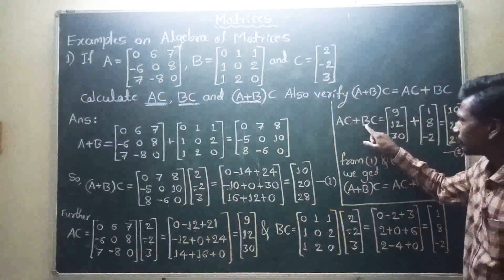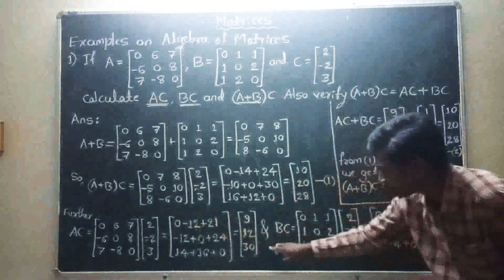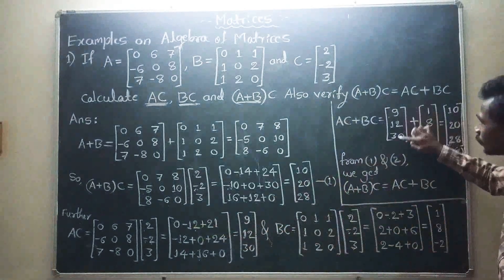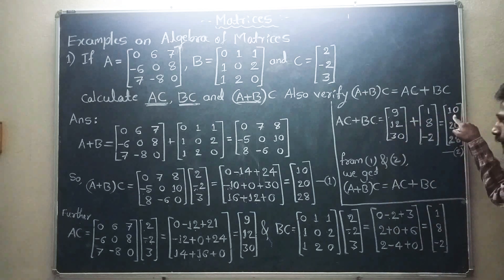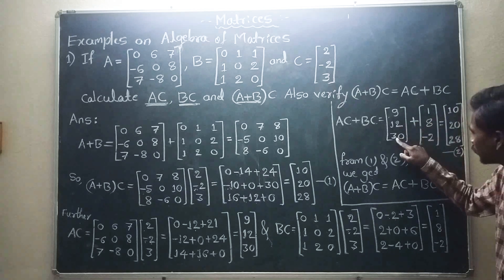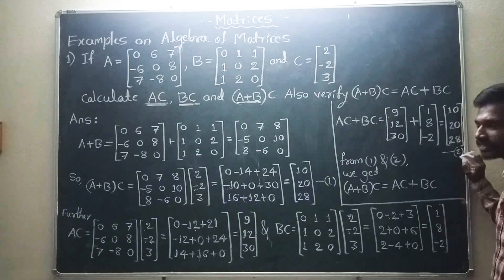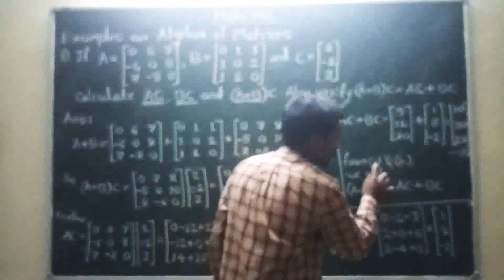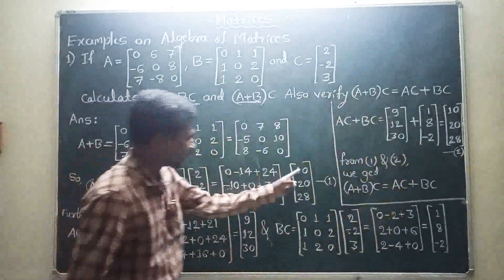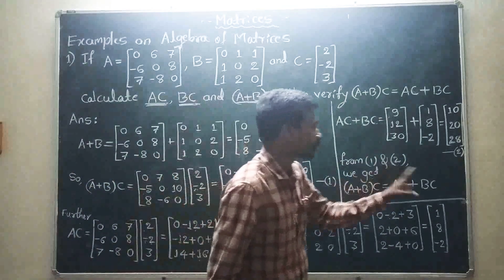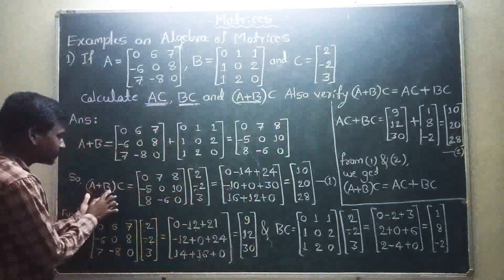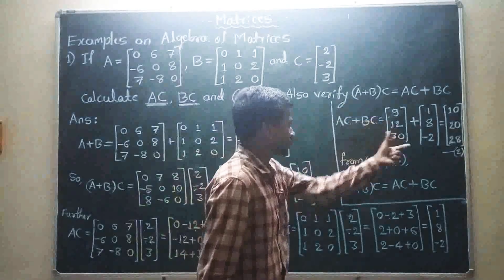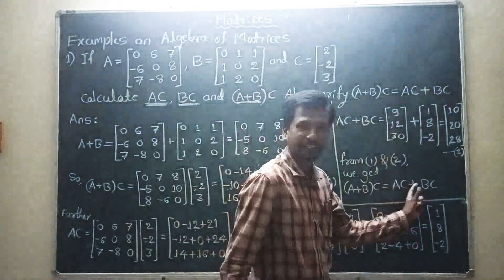A into C plus B into C: A into C value is 9, 12, 30, plus B into C value 1, 8, minus 2. Adding corresponding elements: 9 plus 1 equals 10, 12 plus 8 equals 20, 30 plus minus 2 equals 28. This is equation number 2. From equation number 1 and equation number 2, both equal 10, 20, 28. Therefore A plus B into C is equal to A into C plus B into C.